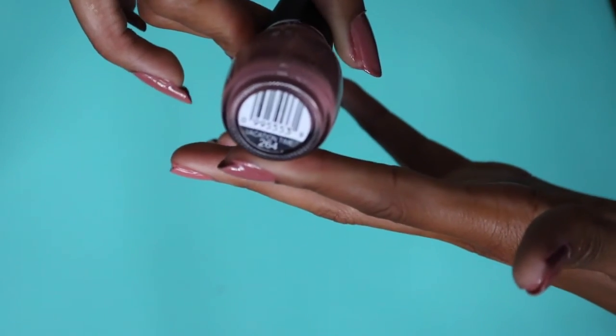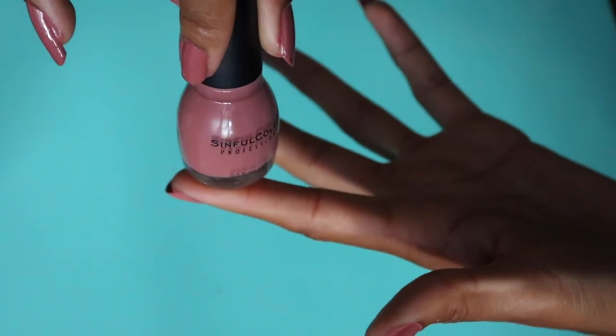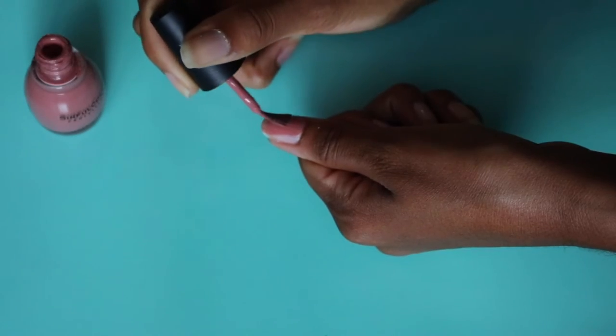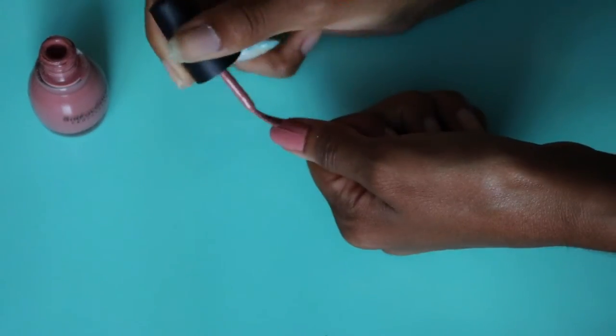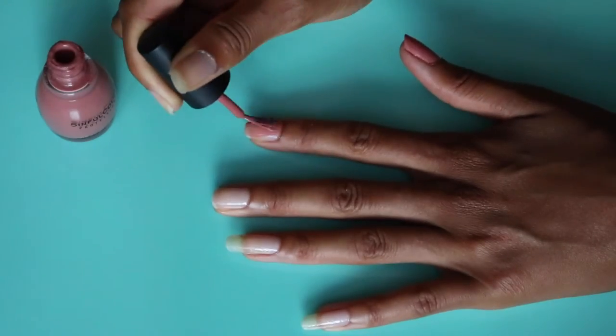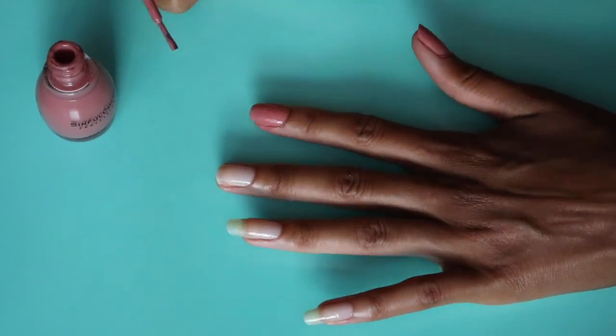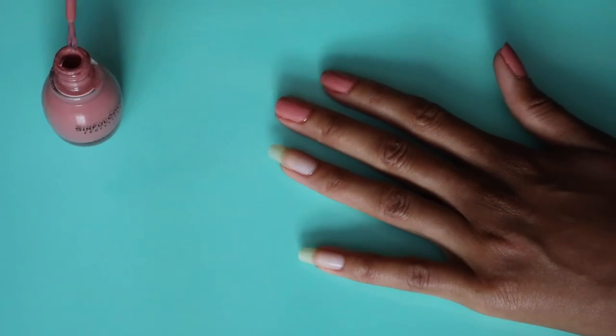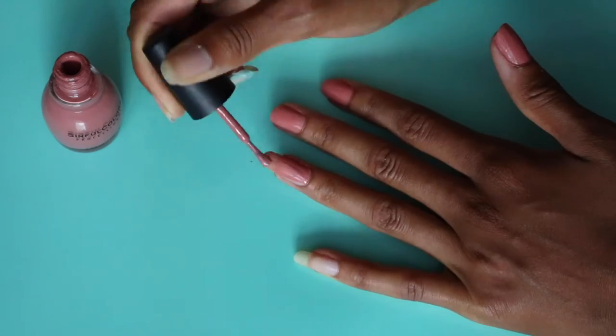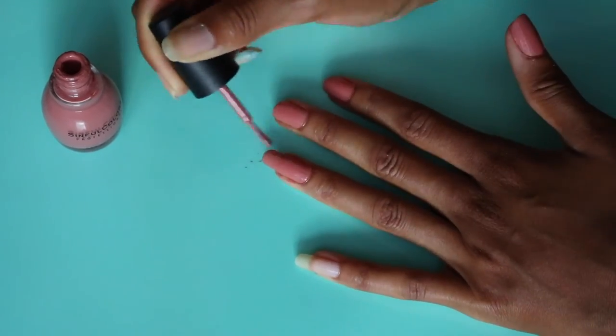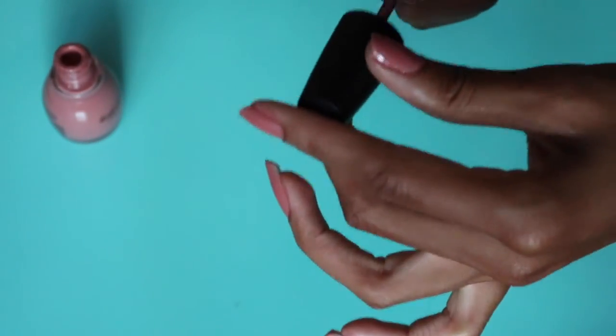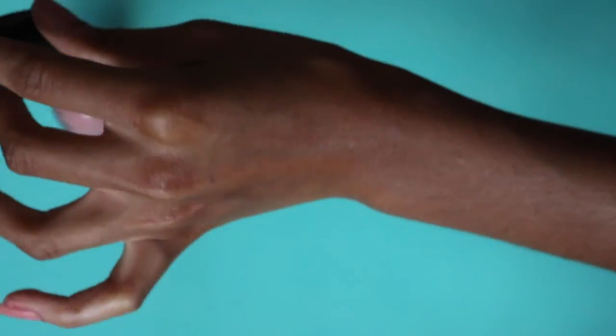Now I'm using the Sinful Colors in Vacation Time. This is what I'm doing my nails. So I just do one coat and then I do another coat. So I have a total of two coats on my nails typically. And here's me trying to do my right hand. As you can tell, I am not left handed. So it's a struggle.